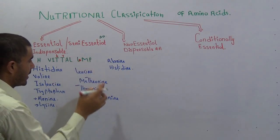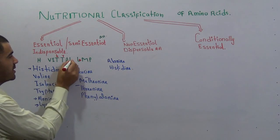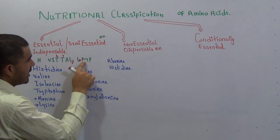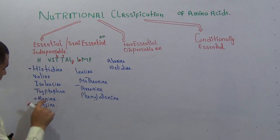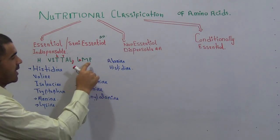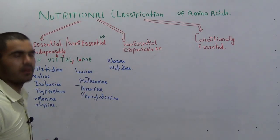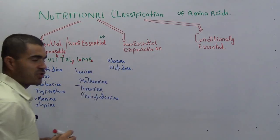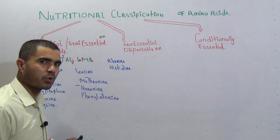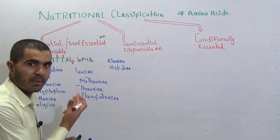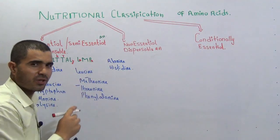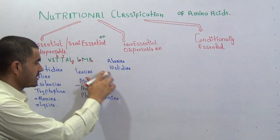L is for leucine, and the second L with a Y written above is for lysine. M stands for methionine, and P stands for phenylalanine. You can add a small H here because there is another amino acid with the name proline starting with P, but proline is not an essential amino acid — phenylalanine is. So you write a small H to distinguish it as PH for phenylalanine.